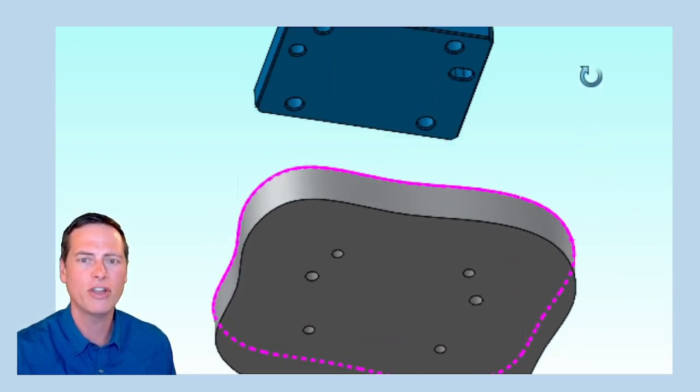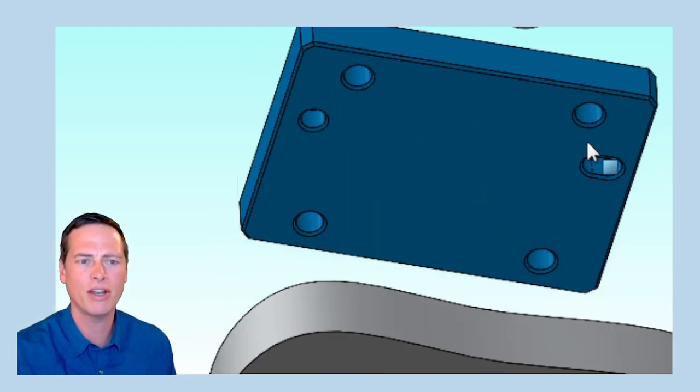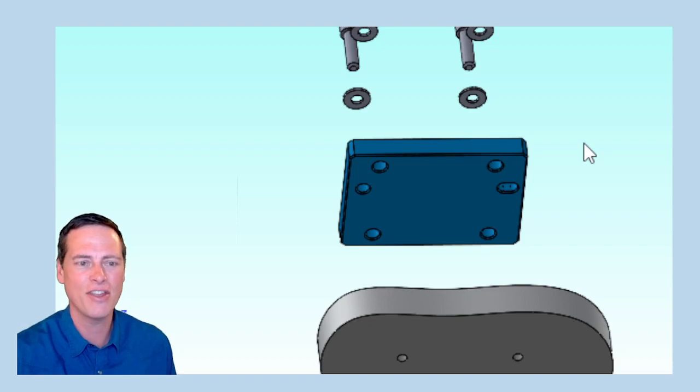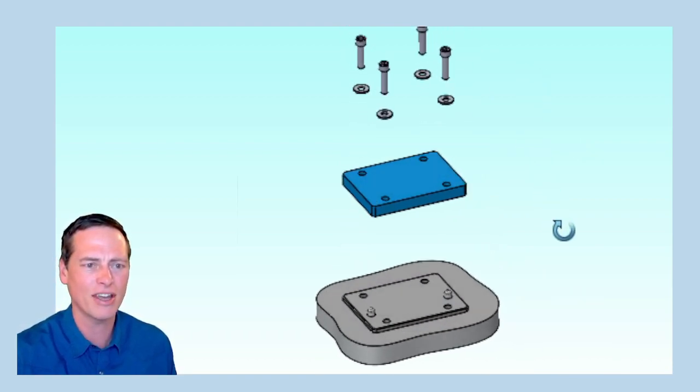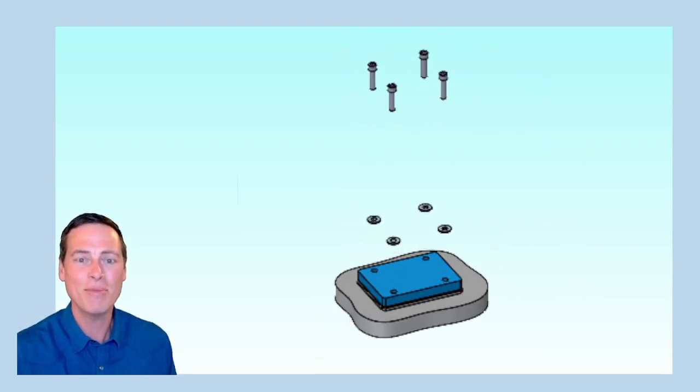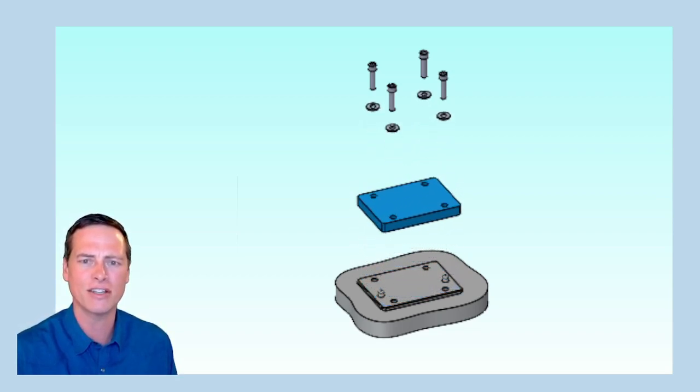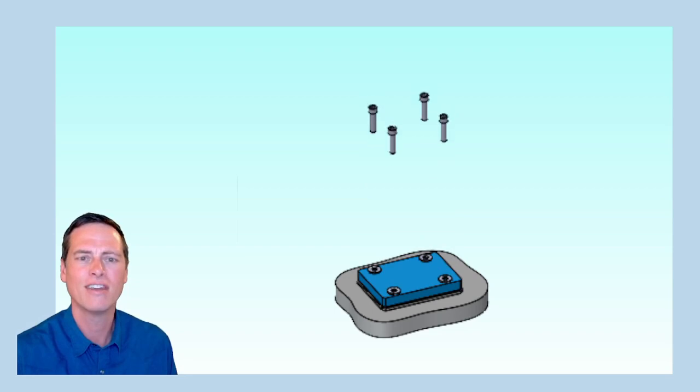The dowel pins in the gray part locate this blue part that has a corresponding hole and a slot feature that will fit closely over the pins. There are screw clearance holes, and then there are fasteners to hold the assembly together. One thing that makes it so satisfying is that the blue part is elegantly constrained in exactly six degrees of freedom.